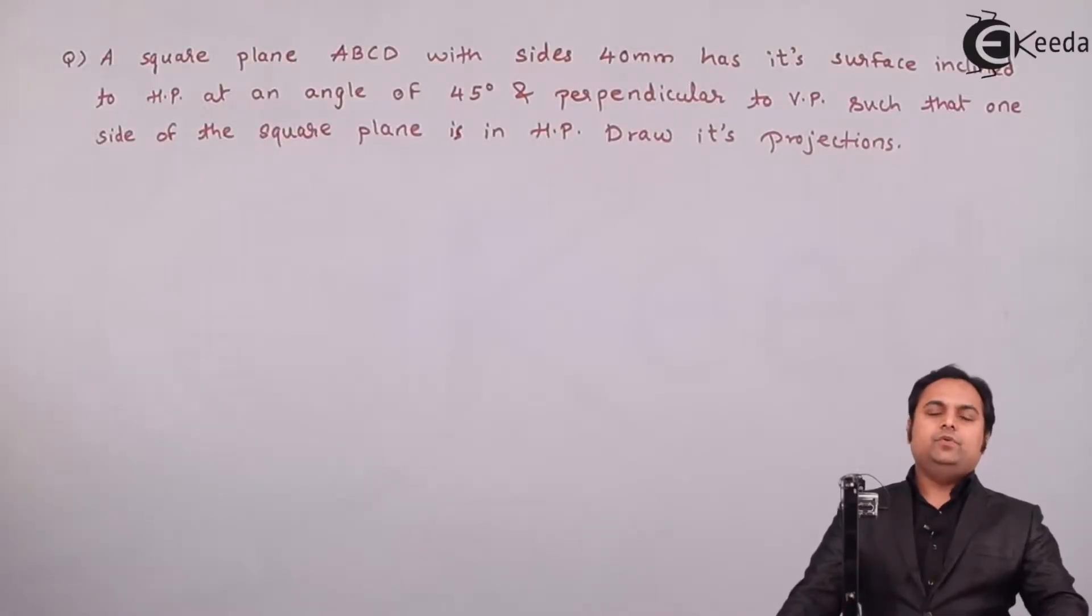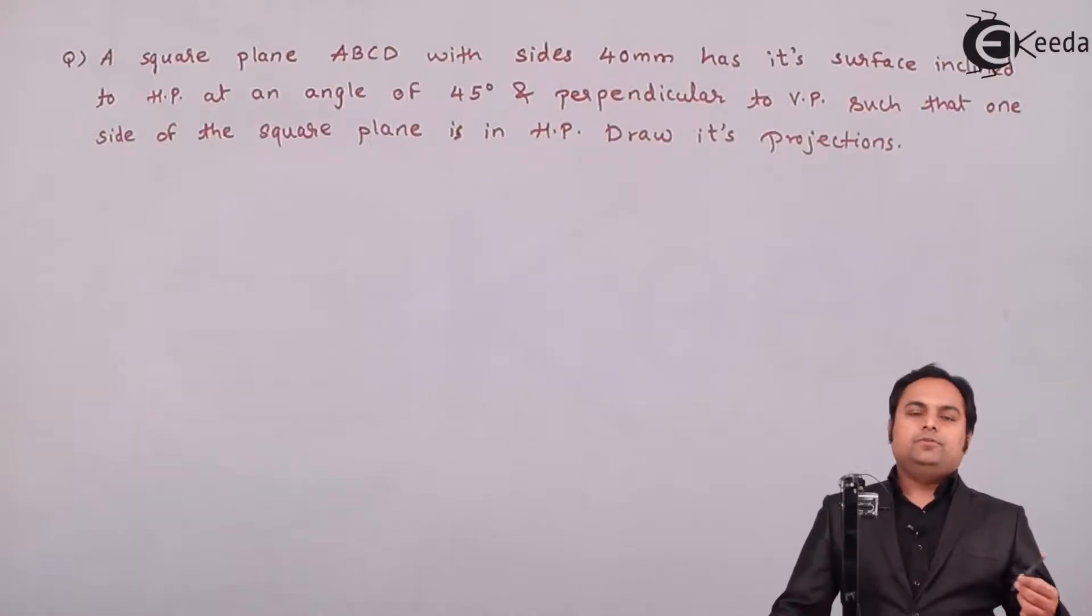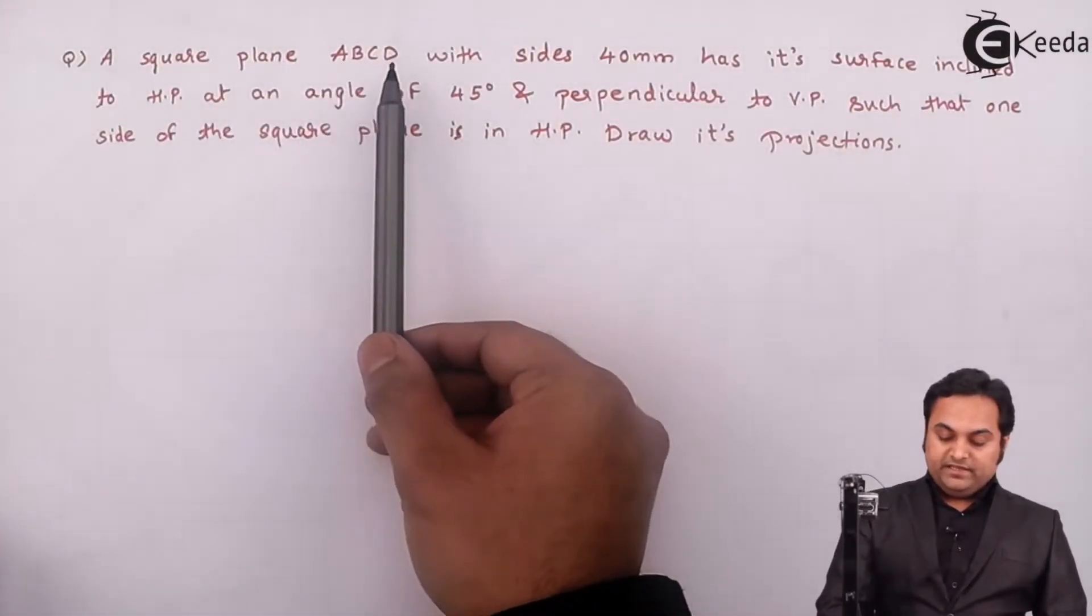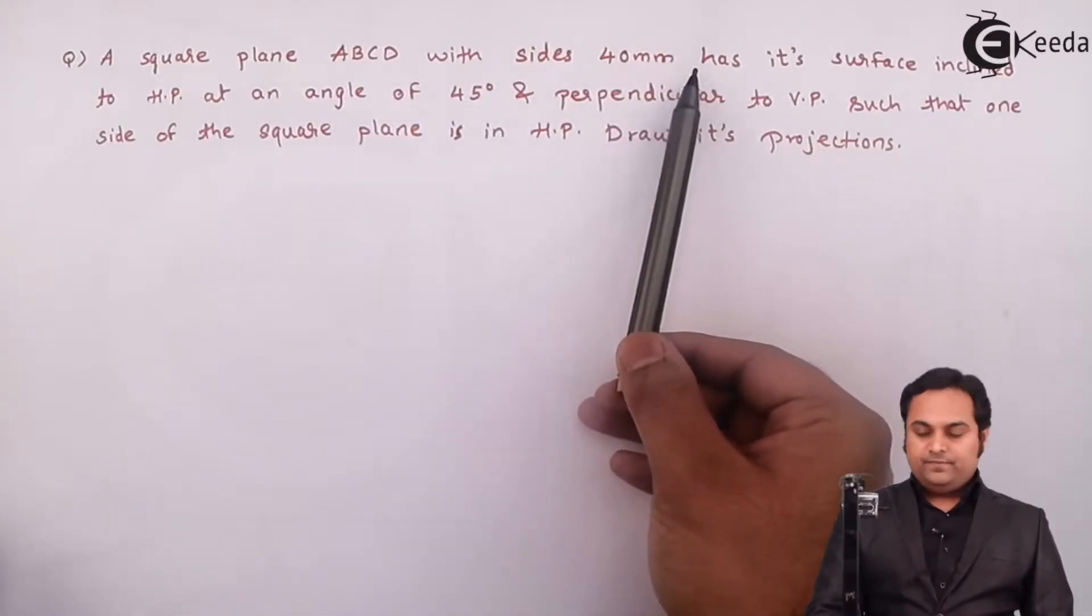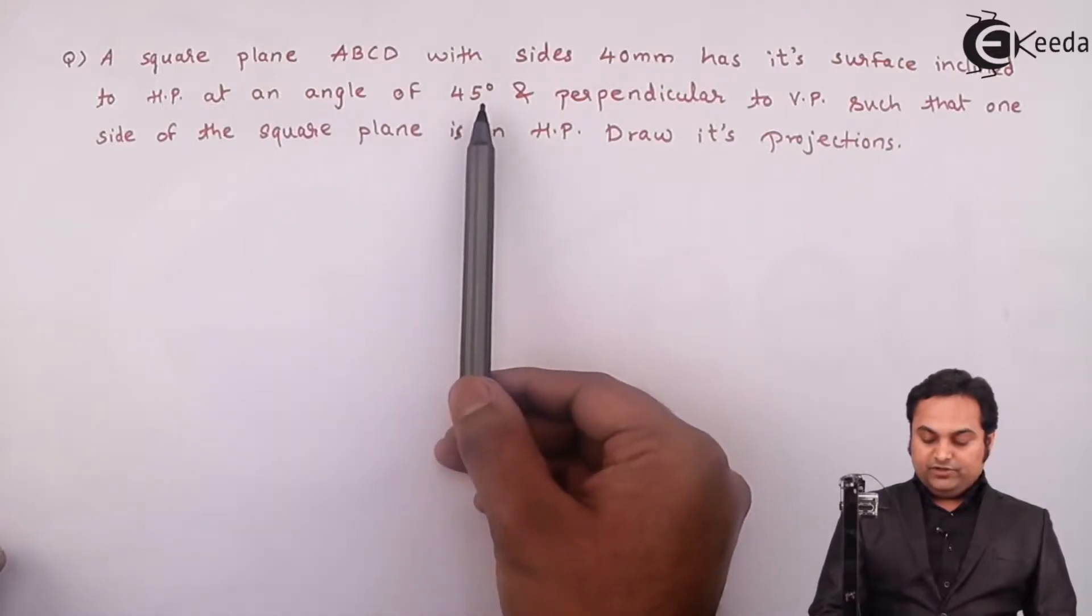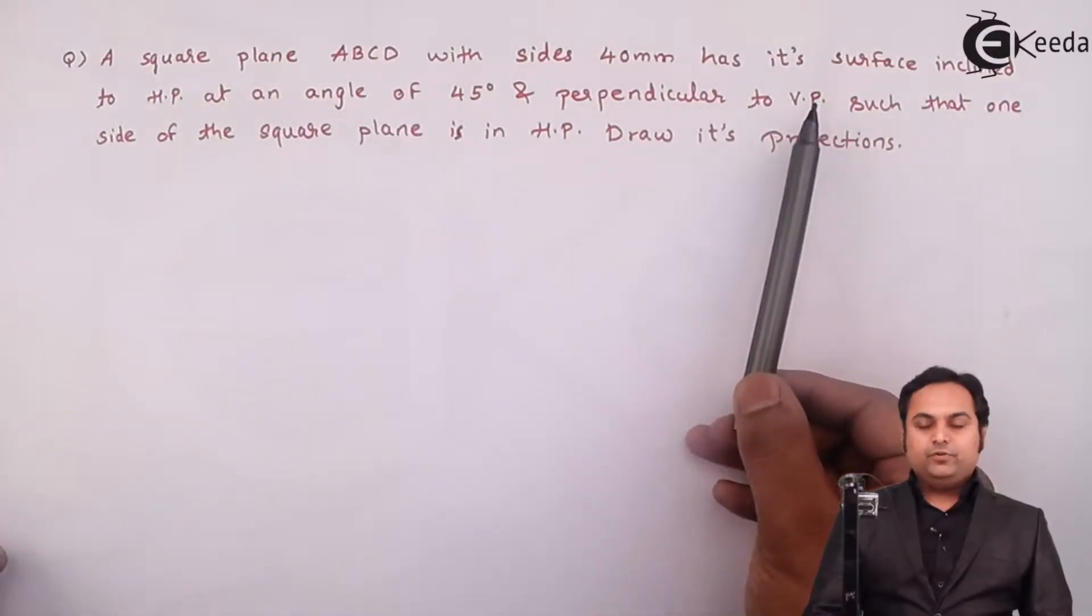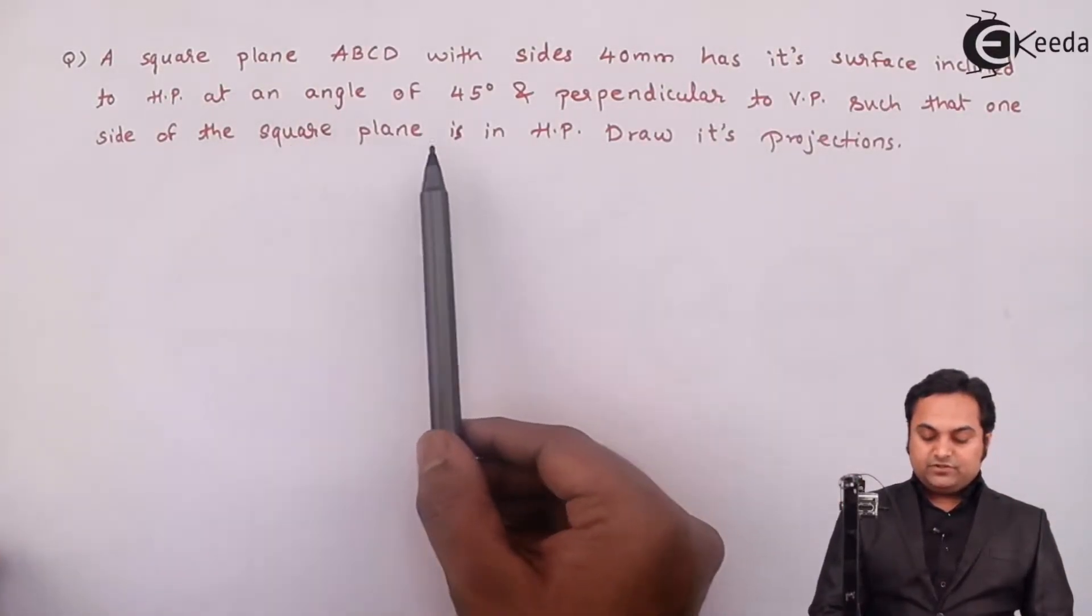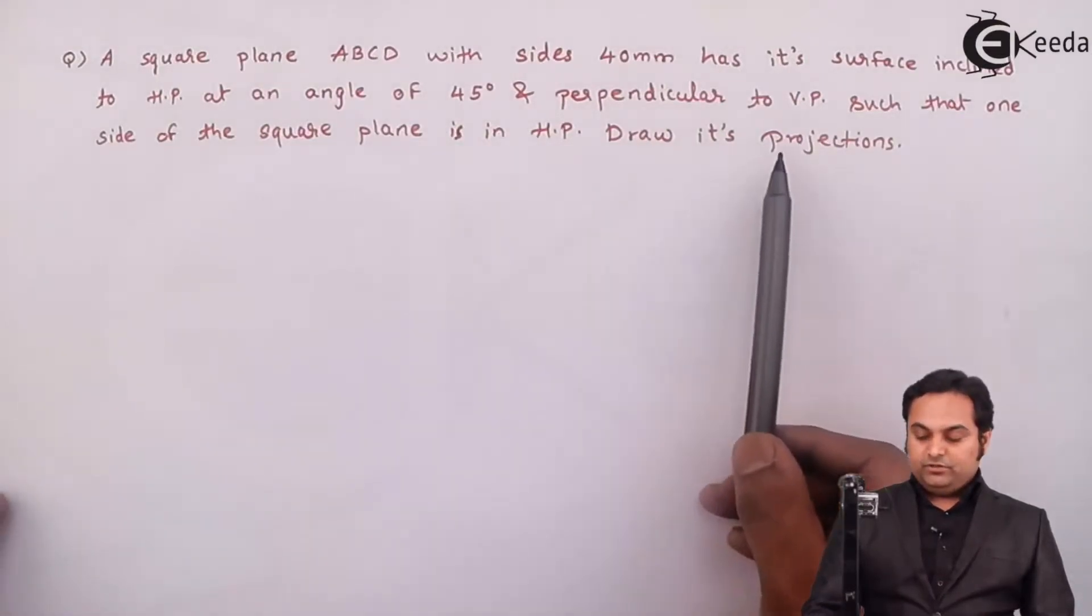Hello friends, in this video we are going to see a problem on projection of planes. The question is: A square plane ABCD with sides 40mm has its surface inclined to HP at an angle of 45 degrees and perpendicular to VP such that one side of the square plane is in HP. Draw its projections.